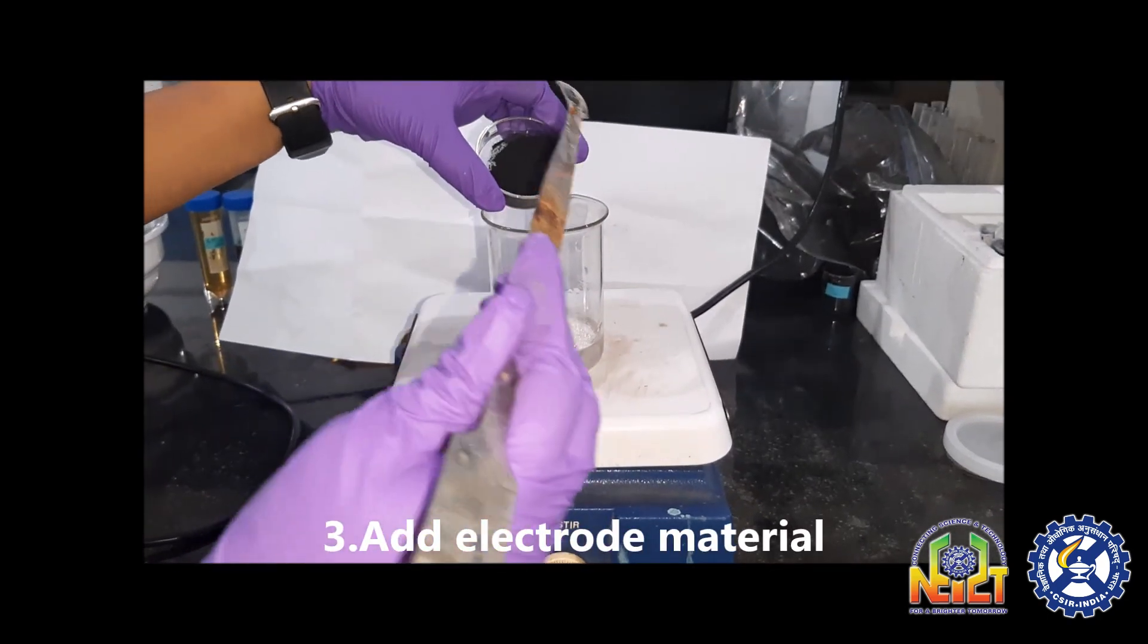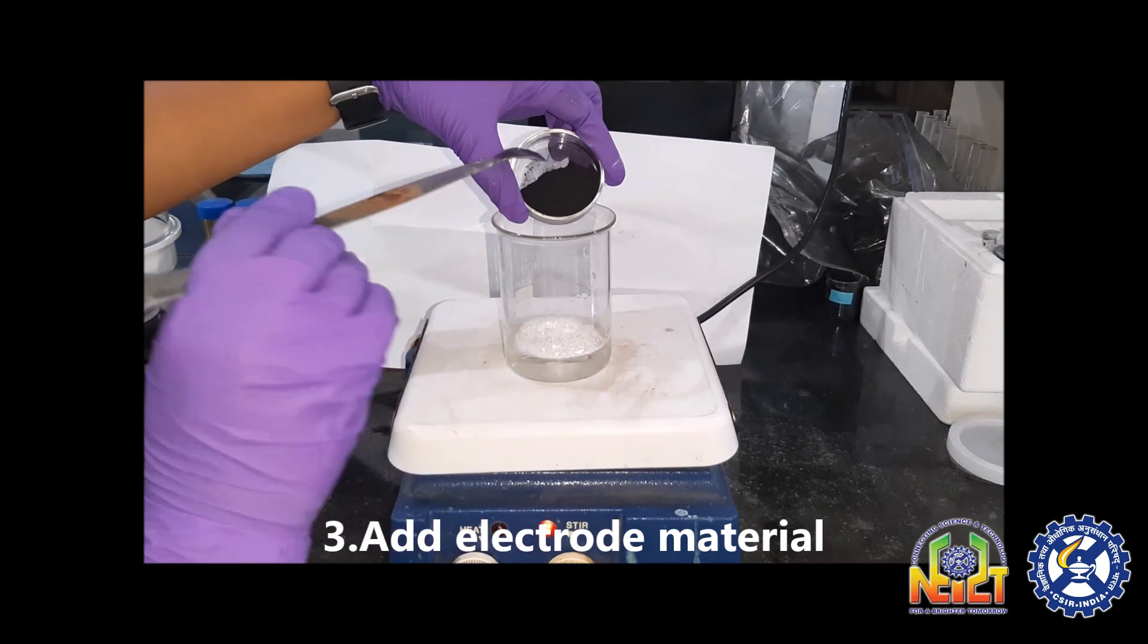Then add chosen electrode material to the mix and stir it properly to get a homogenous slurry.